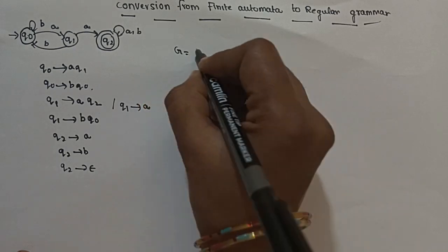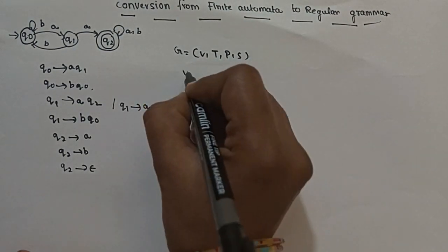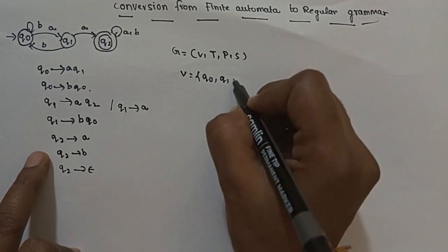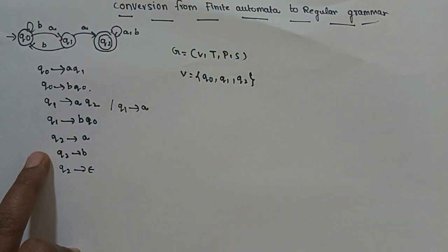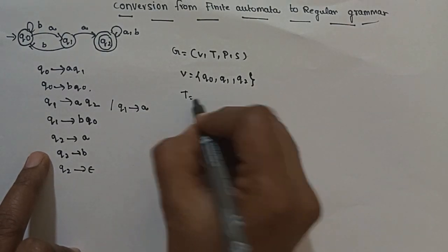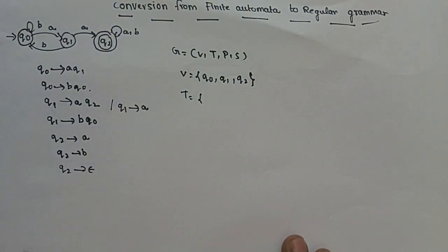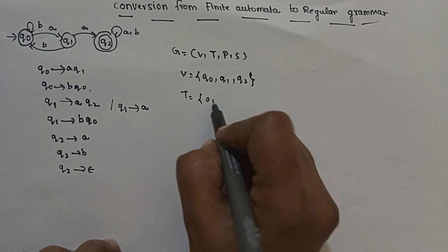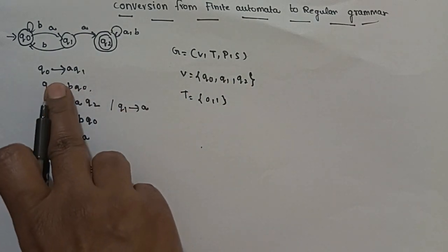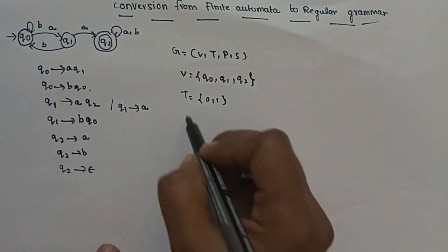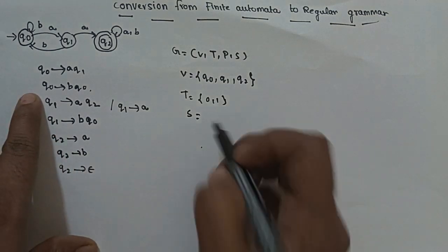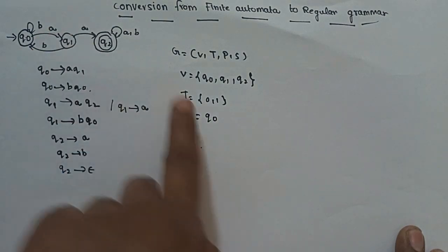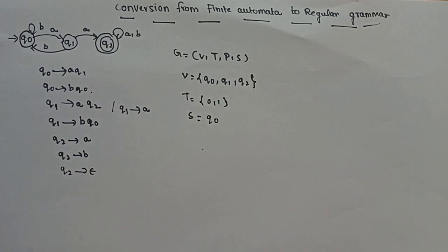Grammar is defined as G equal to a set of 4 tuples: V, T, P, S. V means set of non-terminals, which are Q0, Q1, Q2. T means set of terminals, which is {0, 1}. P means set of production rules. S means starting symbol, which is Q0. So we can now write the complete regular grammar.